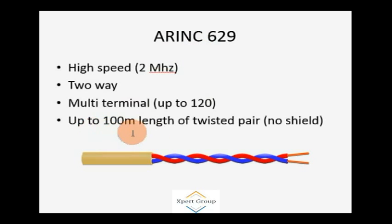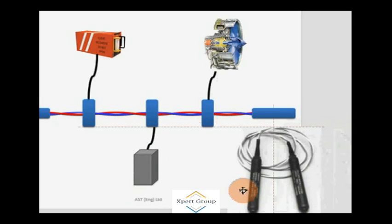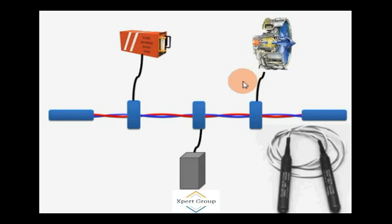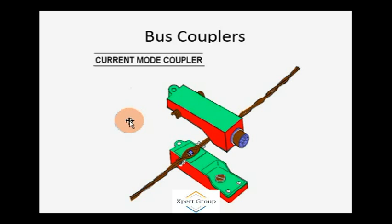You can have up to 100 meters length of twisted pair with no shielding. This is another example. In this example, you can see a flight recorder is attached with the cable. This is called the stub; this is called the terminator. These are the LRUs which are being attached with the main cable. These are stub cables. Bus couplers are the joints which are used to join different equipment with an aircraft.